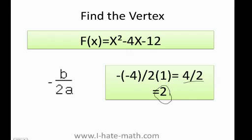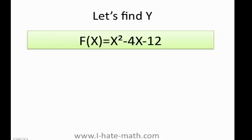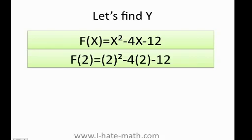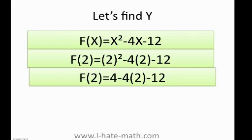Now we're gonna find y. In order to find the y coordinate of the vertex, we're gonna go ahead and plug the value we just found into the equation. So I have 2 times 2, then negative 4 times 2 minus 12. I get 4, negative 4 times 2 is negative 8, minus 12. Finally I have 4 minus 8 minus 12 equals negative 16.